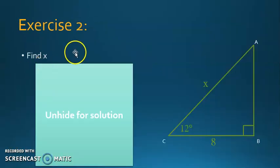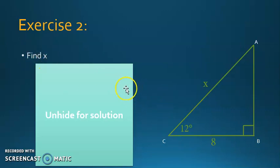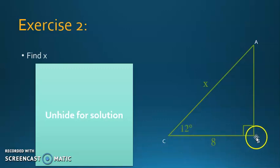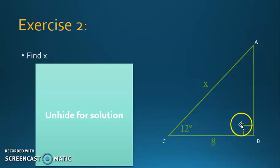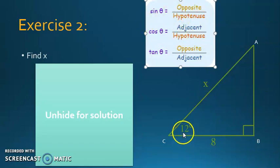Exercise 2: You have a right triangle with the length of CB and the measurement of angle C, and you need to find X. With respect to C, the side CB is the adjacent side, and AC is the hypotenuse since it faces 90 degrees. The ratio that combines both the adjacent and the hypotenuse is cosine. So using cosine 12 degrees equals adjacent over hypotenuse, that's 8 over X.